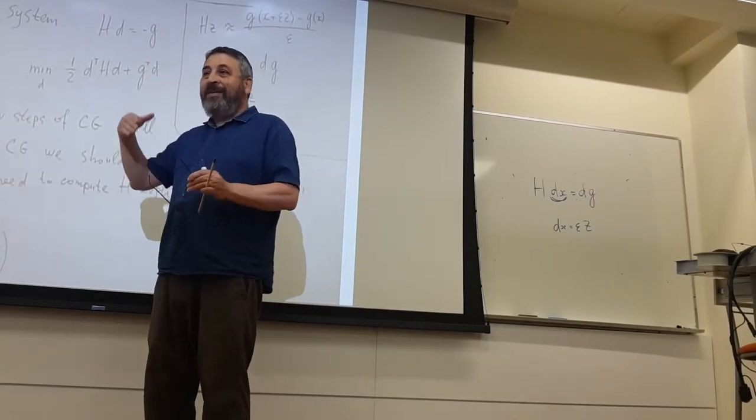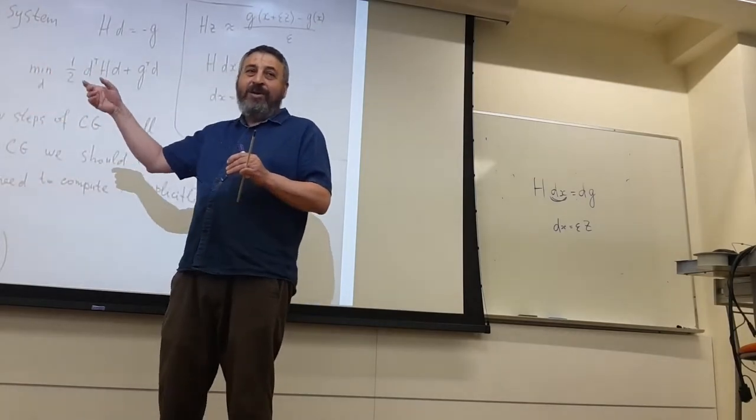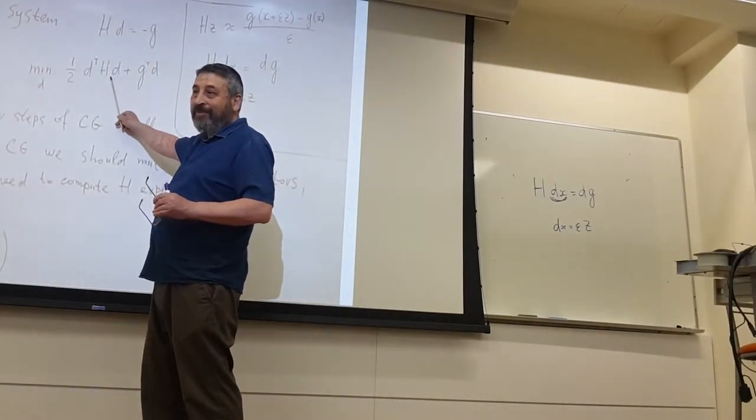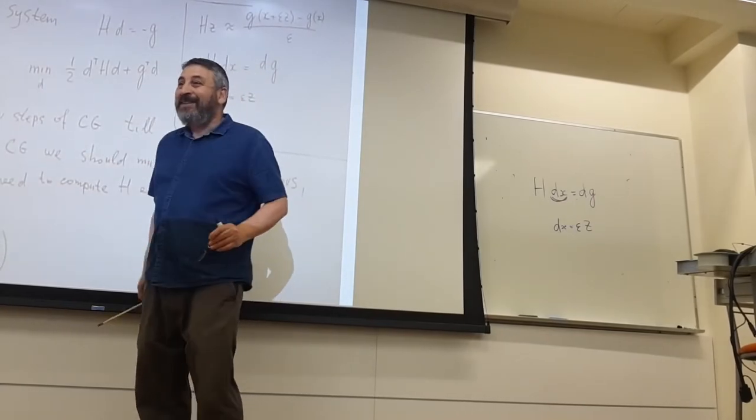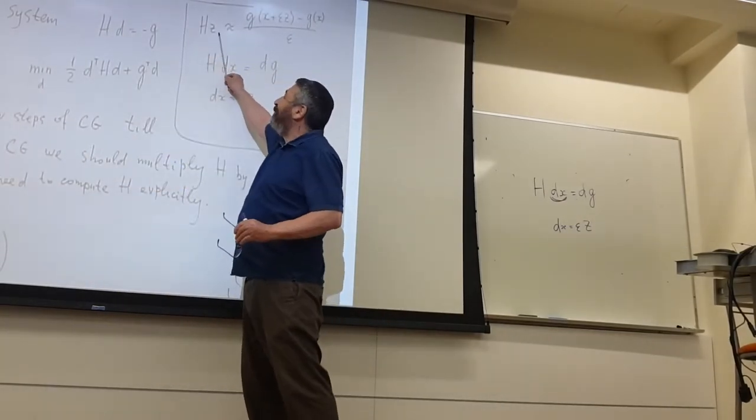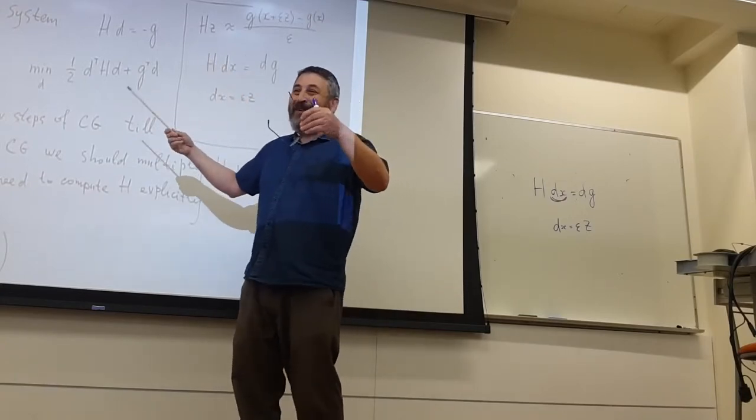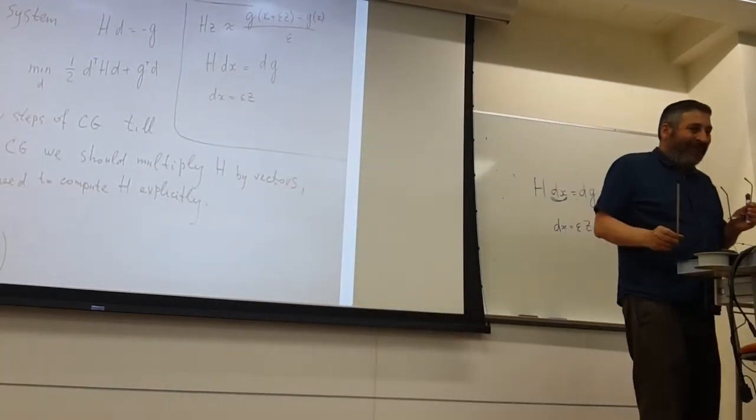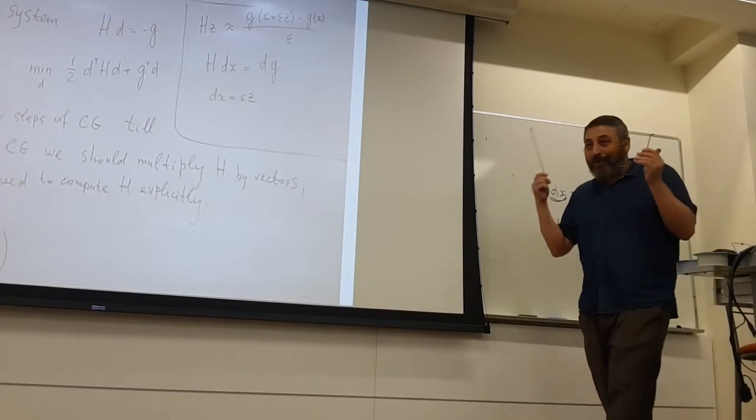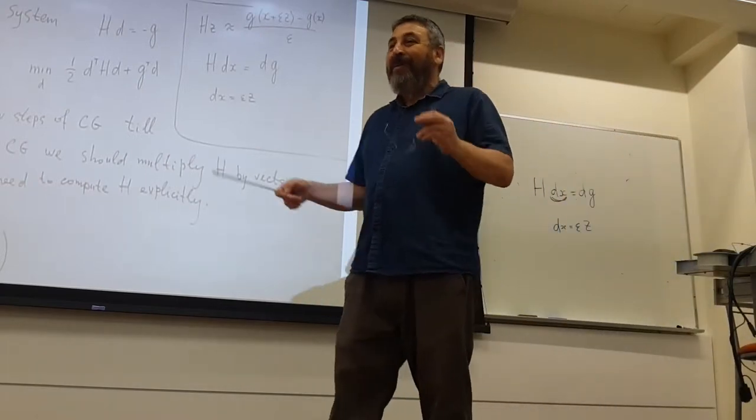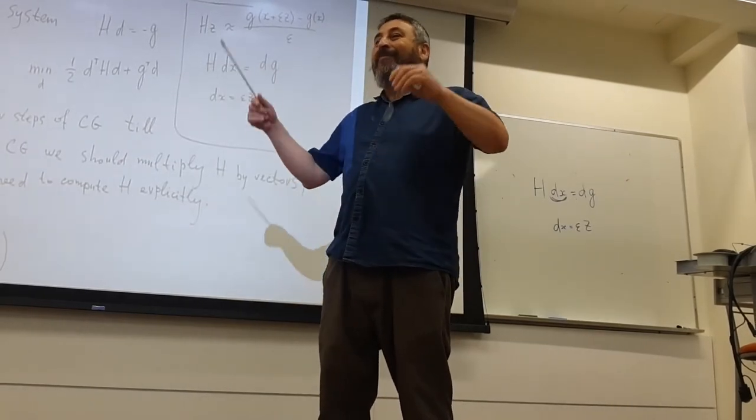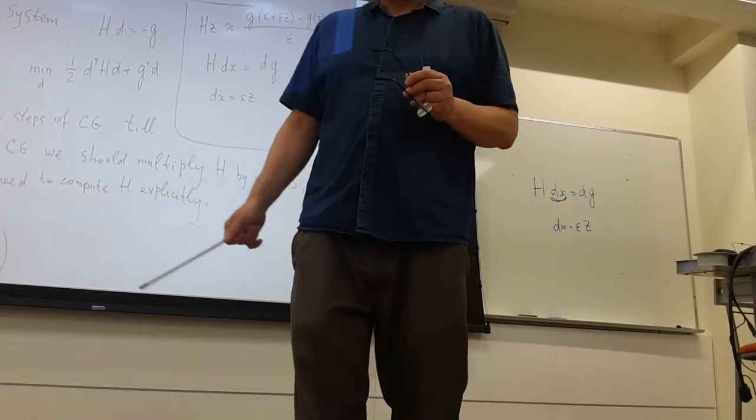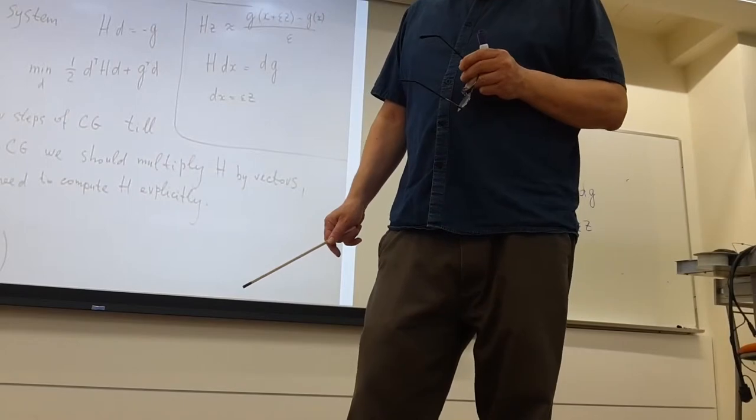You will discover there will be conjugate directions and so on, and the basic operation will be multiplication of my matrix in quadratic function by some vectors. So now my general question, what is product of Hessian by arbitrary vector, and I am clever enough to do it inexpensively without computing, important message, without computing Hessian, because I may have a problem with millions of variables and I cannot store matrix million by million but still I am able to do it.